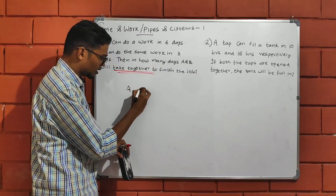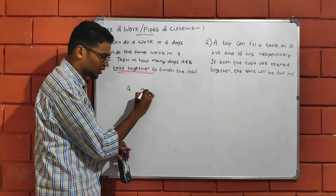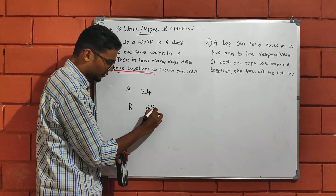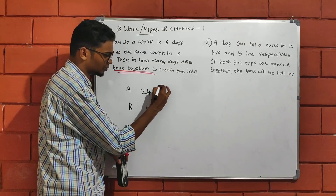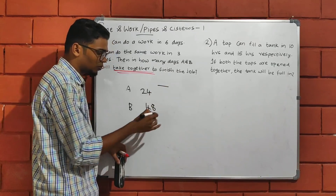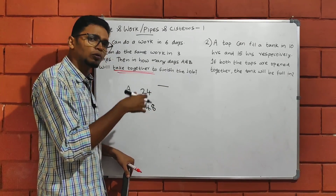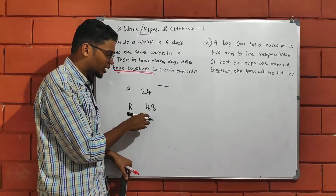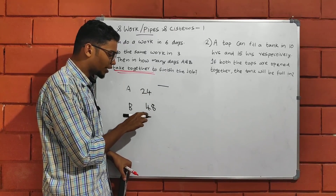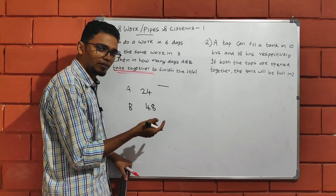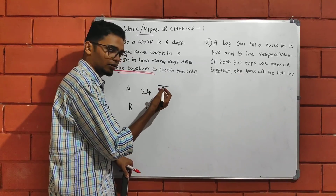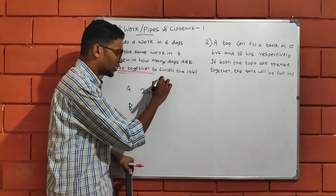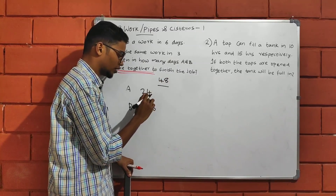Now, A is 24 hours and B is 48 hours. I think it's logical. Using the LCM method, you take the LCM of 24 and 48, then divide the numbers accordingly to find the combined work rate.